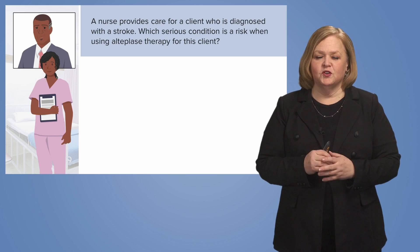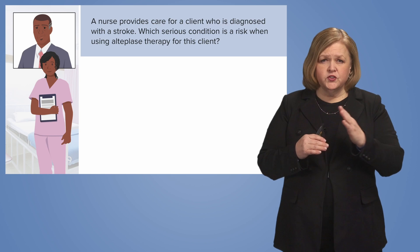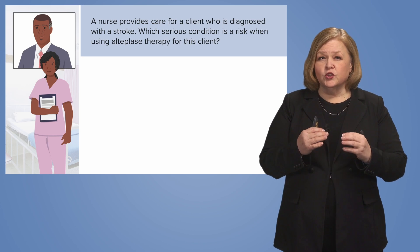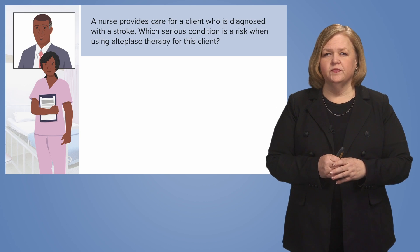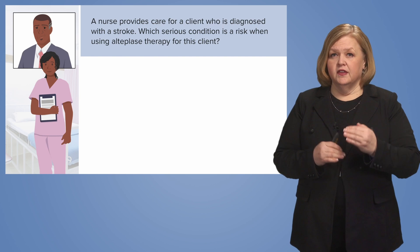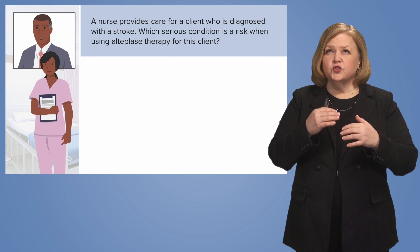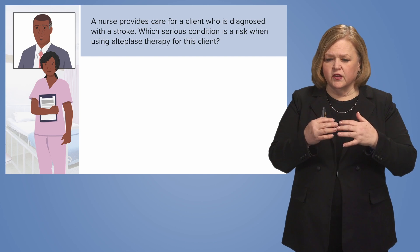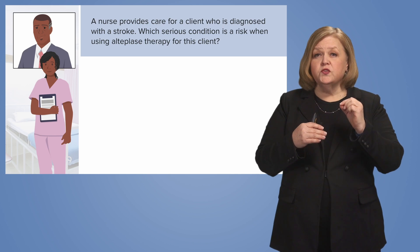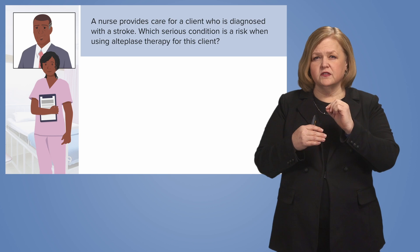Let's get to work. We've got a lot to unpack here. First, we've read the question all the way through. Next, we want to start picking it apart and looking for key clues. So a nurse provides care for a client — we know they've had a stroke. I'm already thinking stroke: worst case scenario, what am I concerned about? Which condition is the most significant risk when using alteplase therapy for this client?